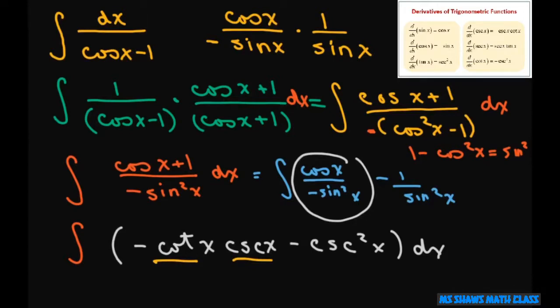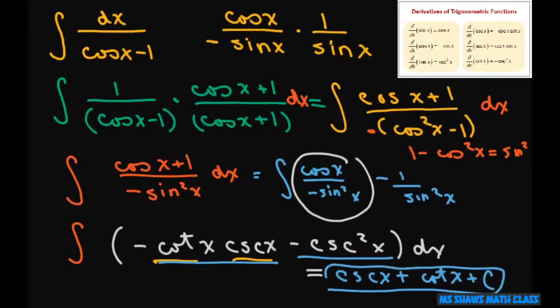Now when you integrate this, you're going to get this equals, this part here is going to be cosecant x, and this part here is going to make it plus cotan x plus c. So that will be your final answer. Remember this part is like on your trig identities that you did for that.